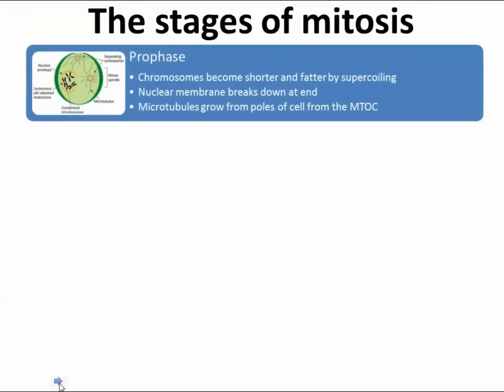A good acronym to help you remember: 'Instant Pudding Made Anytime.' I like to eat instant pudding made anytime. P for prophase, M for metaphase, A for anaphase, T for telophase. The I stands for interphase, which is the rest of the cell cycle — but interphase is not considered part of mitosis itself.